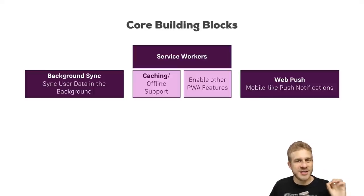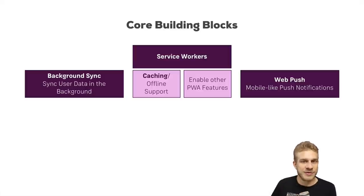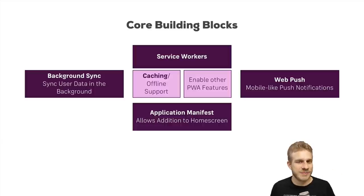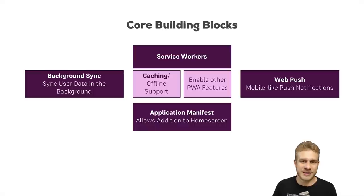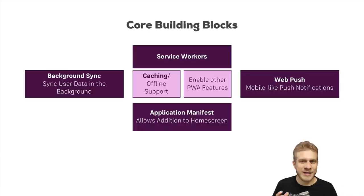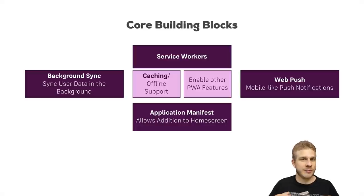Service workers are not the only building block. The application manifest is also important — you'll learn about it in the next course module. The application manifest makes your application installable on home screens, not through an app store, but you can install a web app and have it do more than just open a web page. A web manifest is super important and another feature you use in any progressive web app you build. You can then add more and more features.